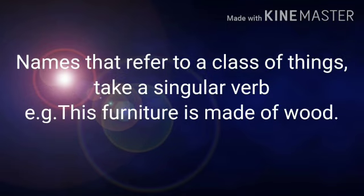Names that refer to a class of things, such as stationery, cutlery, and hair, are singular and must therefore take a singular verb. For example, 'this furniture is made of wood.' Here we consider furniture as a class of things, and that's why we consider it as a singular noun and then only we took a singular verb for it.